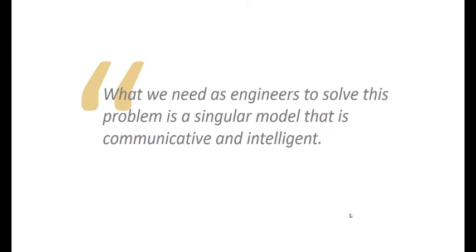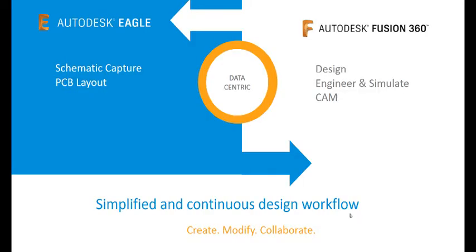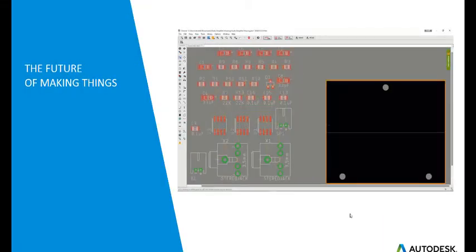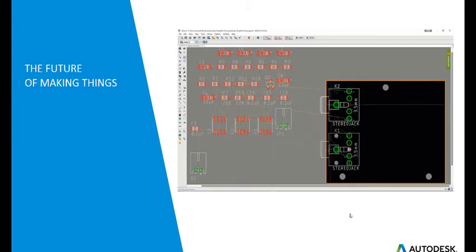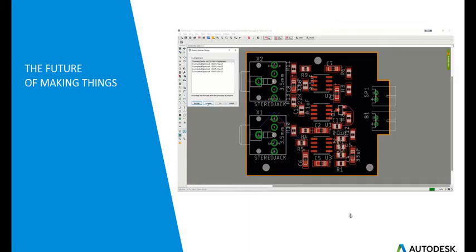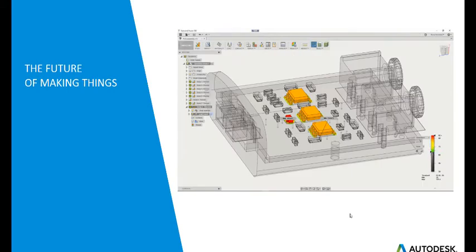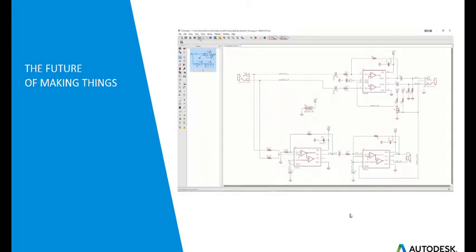What we need as engineers is a singular model that is communicative and intelligent between both worlds, and that's what we've achieved with the ECAD/MCAD integration. This is a data-centric model — both Fusion 360 and Autodesk Eagle can manipulate the same data and act on it. You'll even be able to actively collaborate on the same data. This brief overview shows how it works: the design starts in Eagle, we push to Fusion, and you can also see some of the simulation capabilities of Fusion 360.